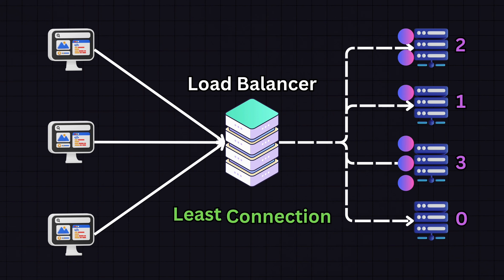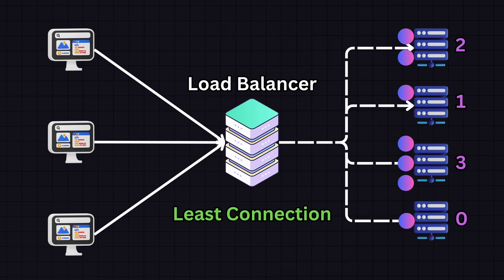Next is the least connections algorithm, which directs traffic to the server with the fewest active connections. It's ideal for longer tasks or when the server load is not evenly distributed.